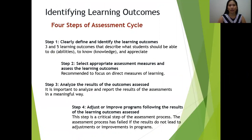In step one, clearly define and identify the learning outcomes — three to five learning outcomes that describe what students should be able to do, their abilities, knowledge, and what they appreciate. These learning outcomes should be clearly identified and defined. According to identifying learning outcomes and selecting assessment tasks, the purpose is to express the desired result of a particular learning.